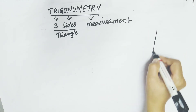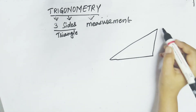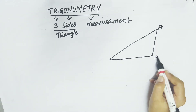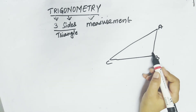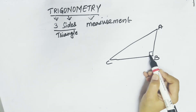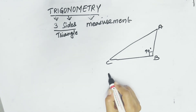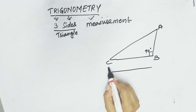Take this example: triangle ABC is your right angle triangle. In a right angle triangle, one angle must be 90 degrees, and the sum of all angles must be 180 degrees.